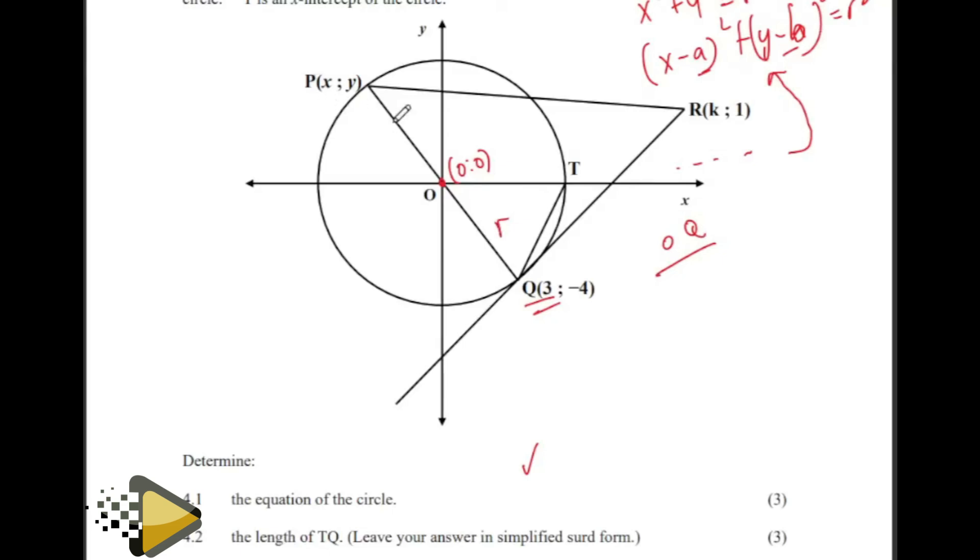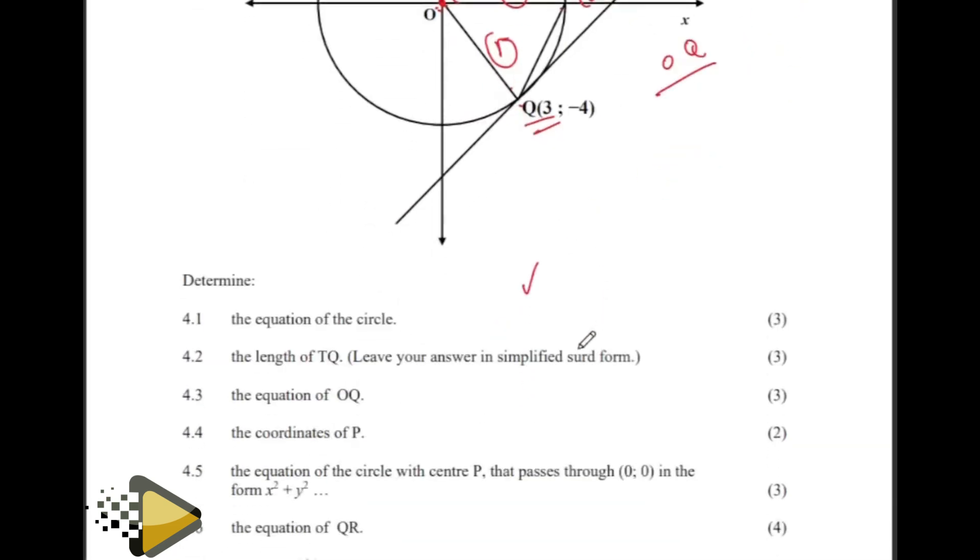Then the length TQ, this length. We know that OQ is a radius, but then even OT is also a radius of the same circle. Which means the distance that we got here must be the same distance that you have here. If let's say it's a 5, then these coordinates are going to be 5, 0. Then after getting the 5, 0, then get that distance using the distance formula.